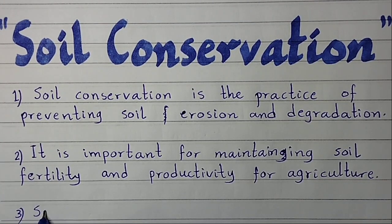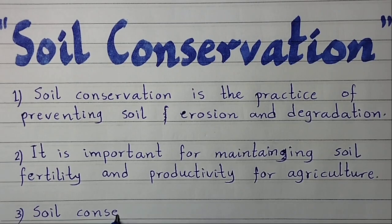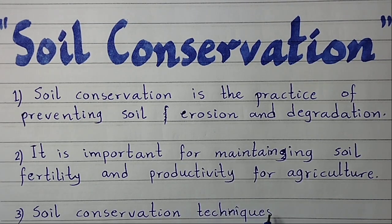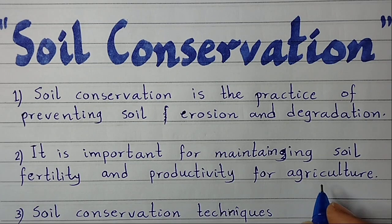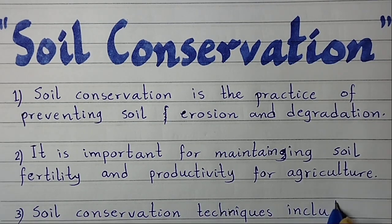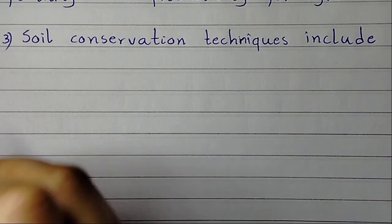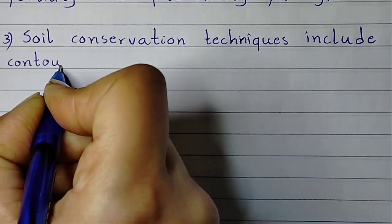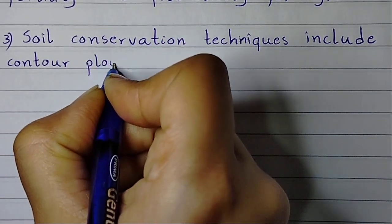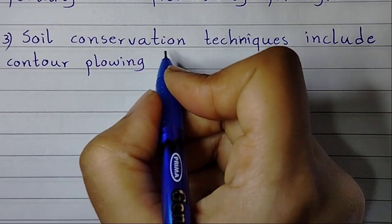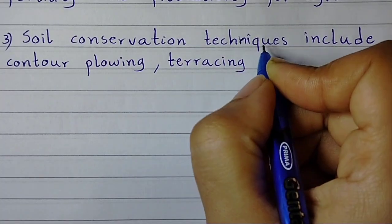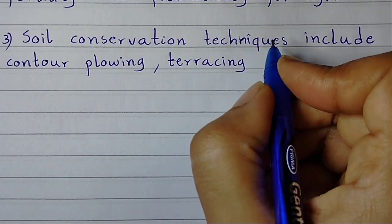Point number three: soil conservation techniques include contour plowing, terracing, and cover cropping.